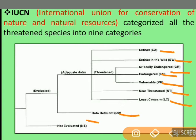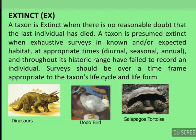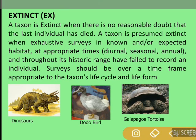Firstly, we will start with Extinct species. A taxon is extinct when there is no reasonable doubt that the last individual has died. A taxon is presumed extinct when exhaustive surveys in known and/or expected habitat at appropriate times — diurnal, seasonal, and annual — throughout its historic range have failed to record an individual. Surveys should be over a time frame appropriate to the taxon's life cycle and life form. Examples of extinct species are dinosaurs, dodo bird, and Galapagos tortoise.